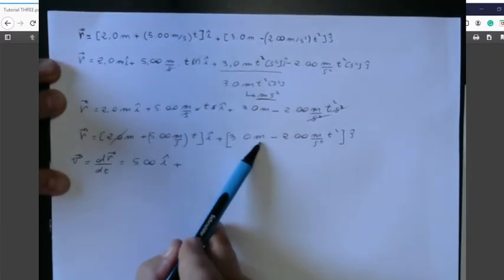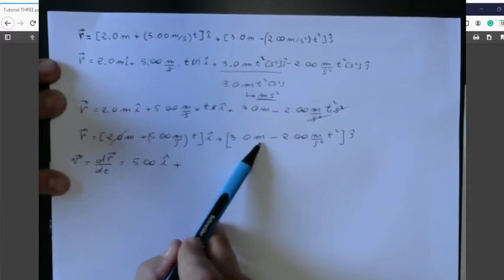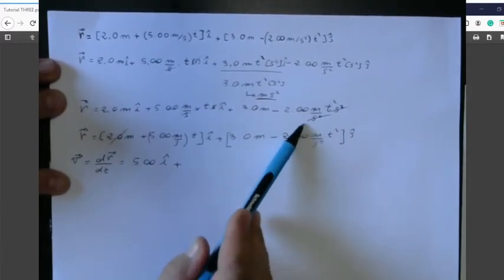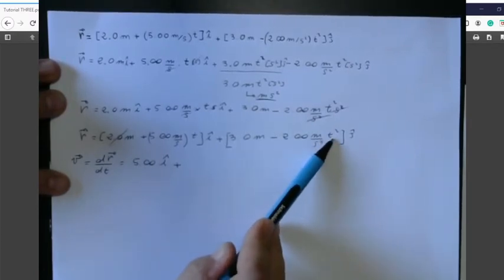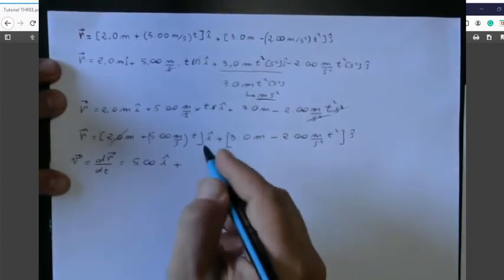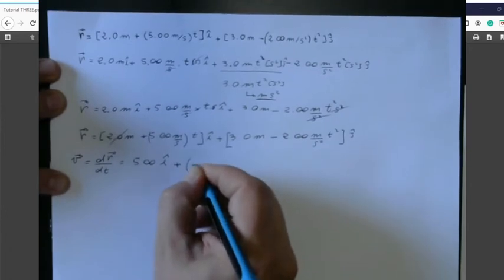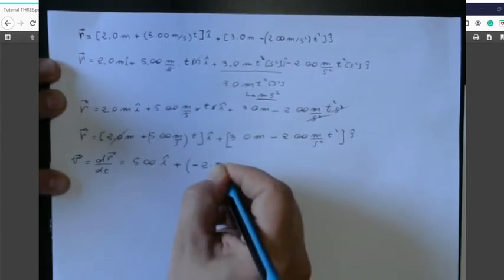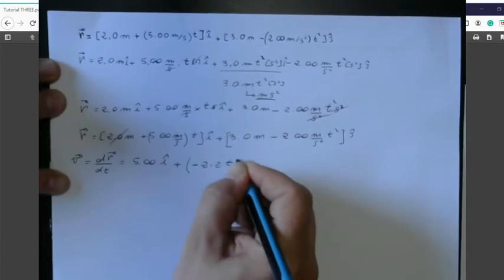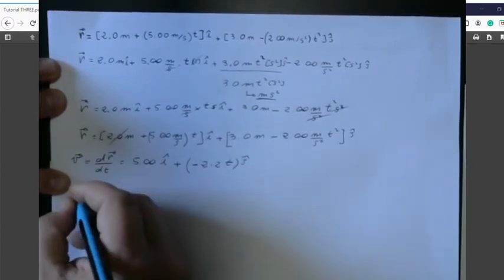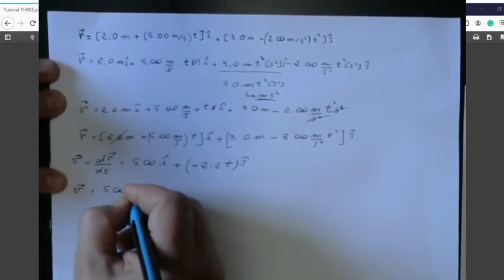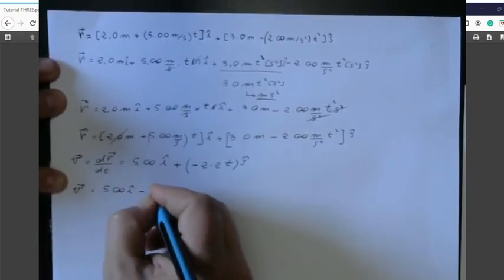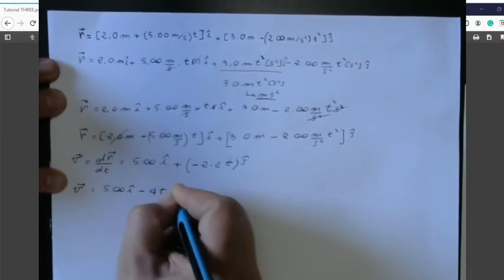Also, that term is constant. What is not constant now is that term here that is minus 2.00 times t squared, but the first derivative of time squared is 2 times t. We have minus 2 times 2t j. The velocity has a component 5.00i minus 4t j.